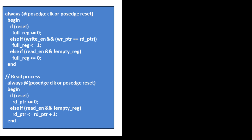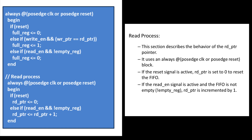Another always block updates the status of the full register. At posedge clock or posedge reset: if reset is high, 0 is assigned to full reg since the FIFO is empty. Otherwise, if write enable is high and write PTR equals read PTR, the FIFO is full — we are at the end of the FIFO — so 1 is given to the full register. If read enable is high and empty reg is low, then 0 is given to the full register, indicating the FIFO is not full.